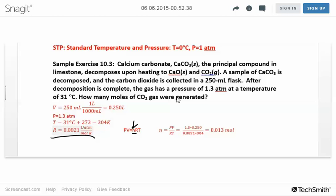We have everything except n. Rearrange the equation to solve for n by dividing both sides by RT. So PV over RT gives you n. Then we just plug everything in.